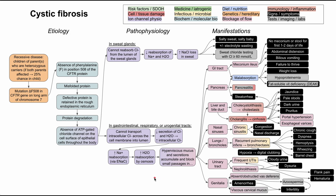I hope this review was helpful. It really shows how all of the manifestations originate from this hyperviscous mucus and secretions, and how all of that happens because of this problem with the chloride channel on the cell surface of epithelial cells. Thank you for listening.